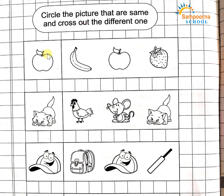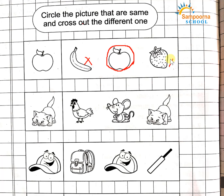This is a picture. A for apple. Now do you see the apple pictures are the same? Yes. This one is the same picture, this one is the same picture, this one is the same picture. So what do we do? Circle the picture.